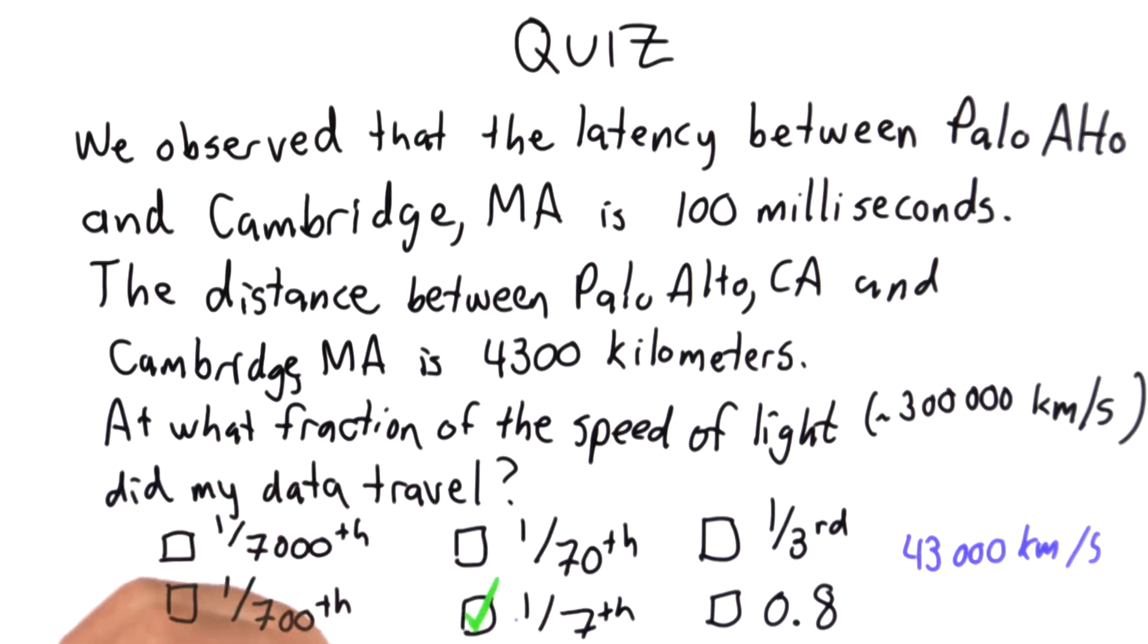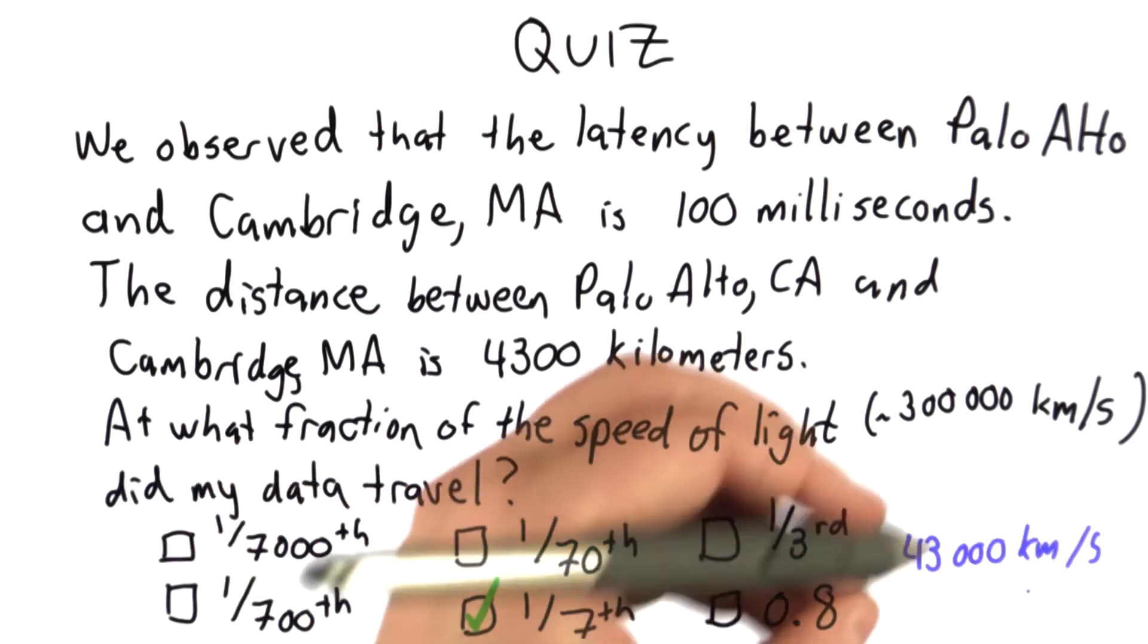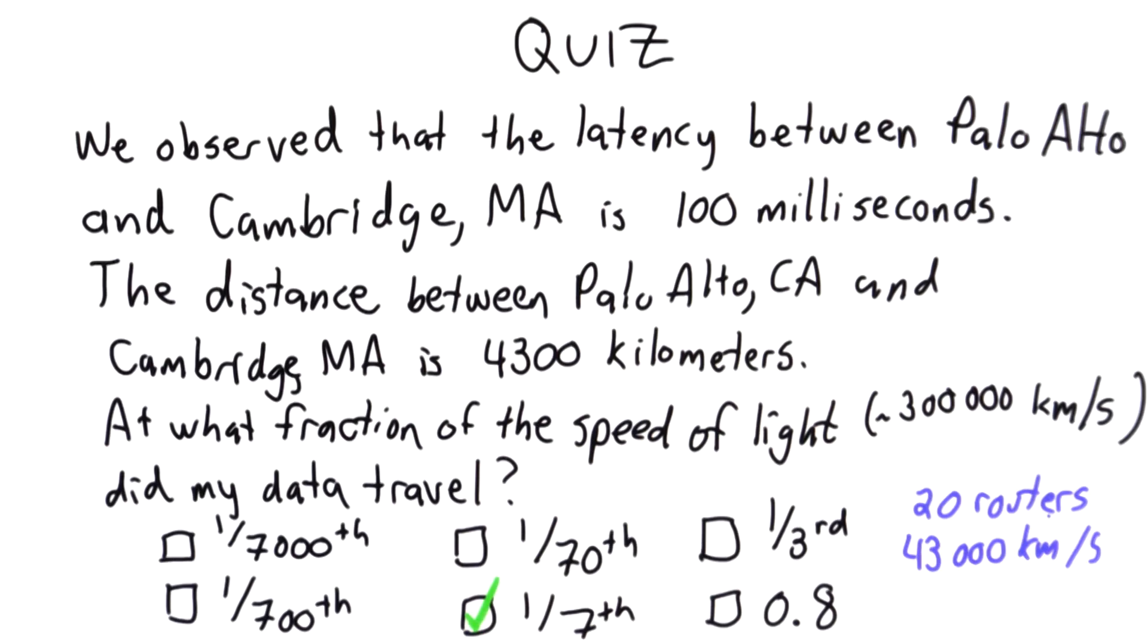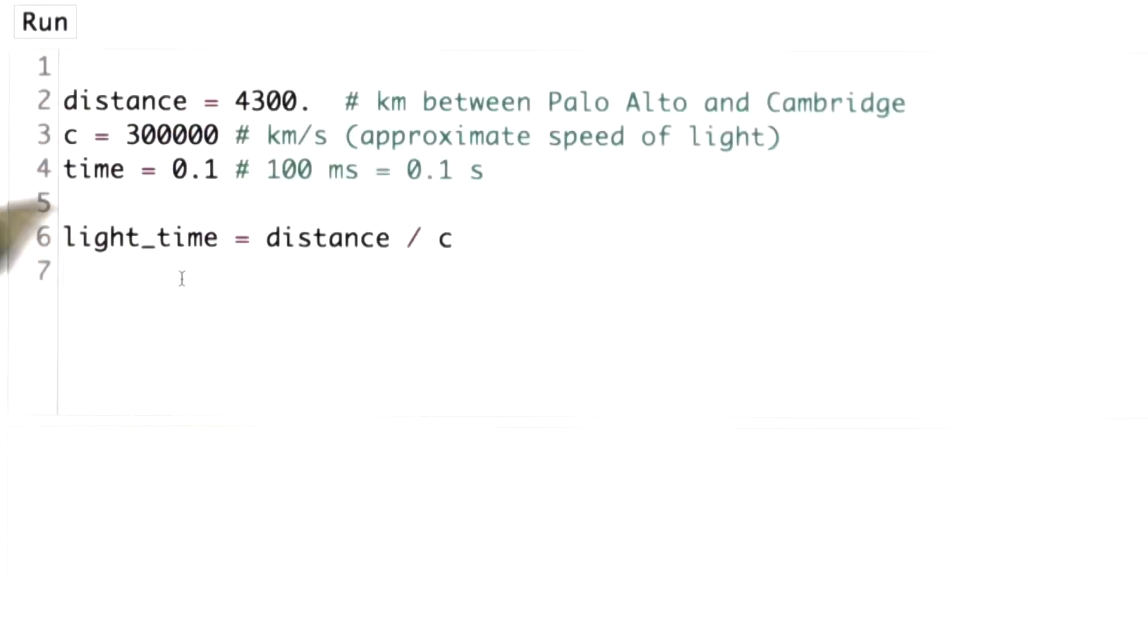And we saw that from the trace route that it went through about 20 routers. So each of those routers had to take a packet in, figure out where to send it, and do all that in the time that it had to travel across the country, which was 100 milliseconds total. So the average speed going across the country was 1/7th the speed of light. And I can show you the Python code to compute that.